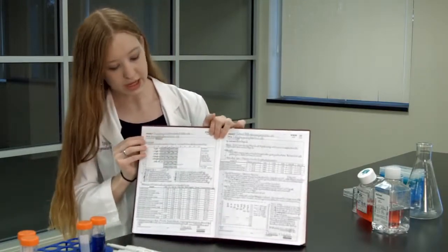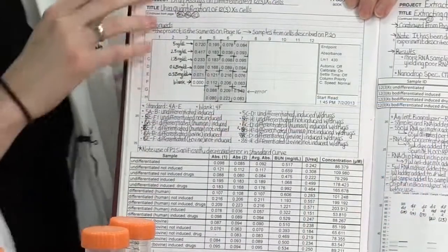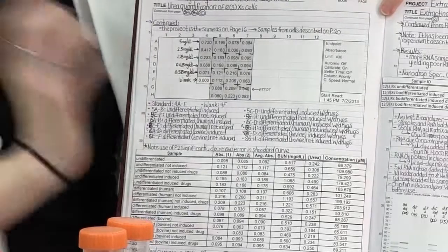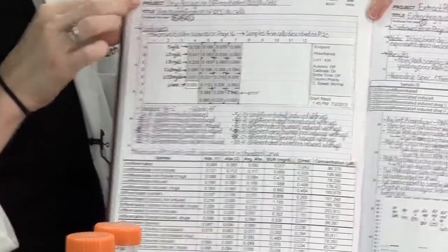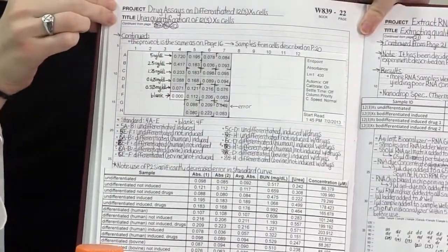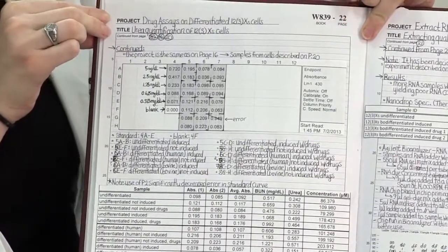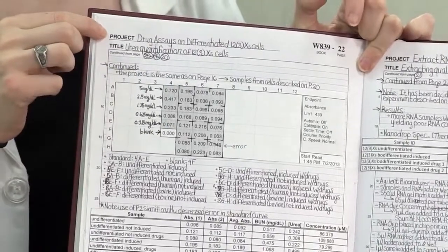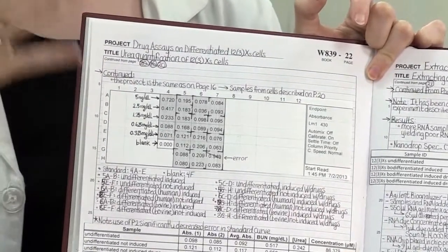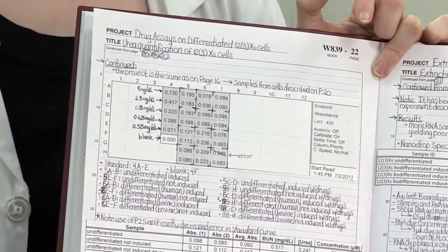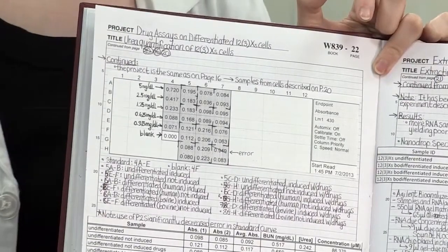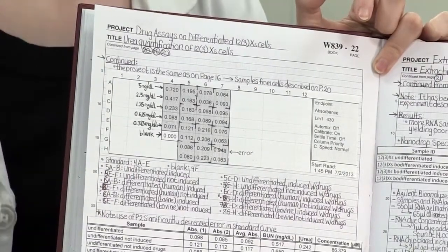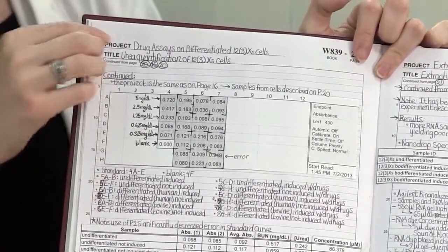The next important thing is, here's a page of my lab notebook and you can see it's numbered and it has sections up here for both the project and the title of whatever I'm documenting on this page. The project is really important because that will allow you to differentiate between different projects that you might be working on. Sometimes you might be using the same assay for a different project and it helps differentiate.